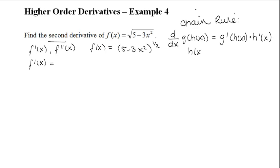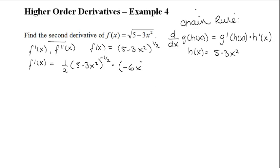Here we see that our inner function is 5 minus 3x squared. So the derivative of our outer function is going to be one half times 5 minus 3x squared — leaving the inner function inside — and then subtract 1 from the half, so it's negative one half. Now multiply by the derivative of the inner function, which is negative 6x. Simplifying, negative 6x over 2 is negative 3x, so f prime of x is negative 3x multiplied by 5 minus 3x squared to the negative one half.